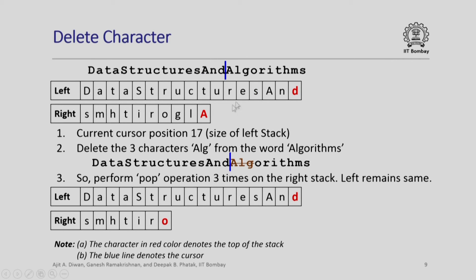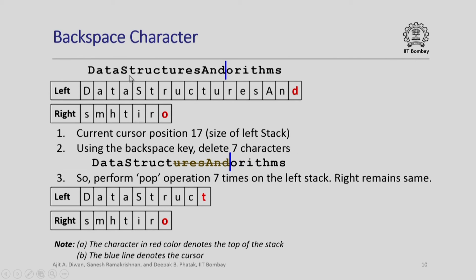How do I delete a character? Very simple. The current cursor position is 17. Suppose I want to delete three characters A, L, and G from the word 'algorithm' — I perform the pop operation three times on the right stack; the left stack remains the same. For backspace deletion, suppose I want to delete seven characters to the left of the cursor: U, R, E, S, capital A, N, D. I perform the pop operation seven times on the left stack. What remains on the left will be just 'data struck'. This is to demonstrate the impact of backspace and del, and how they are implemented using the two stack model.